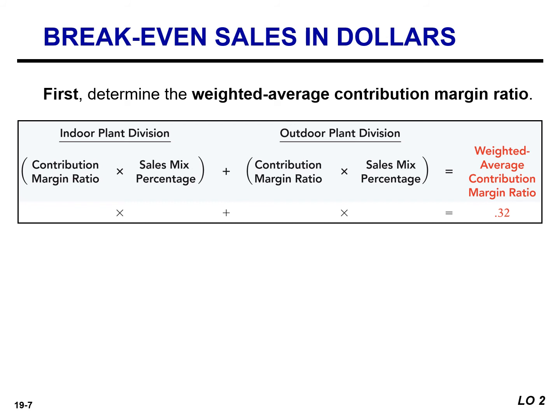For the indoor plant division, the contribution margin ratio of 40% multiplied by the sales mix of 20% gives 8%. For the outdoor plant division, the contribution margin ratio of 30% multiplied by the sales mix of 80% gives 24%. Adding 8% plus 24% gives 32%, which is the weighted average contribution margin ratio for the company.